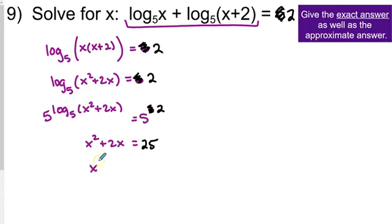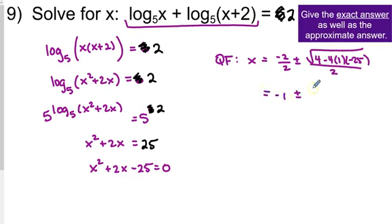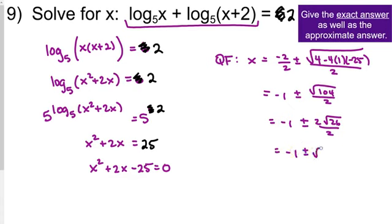It's still going to be a little complicated because it's likely not factorable, so we'll use the quadratic formula. We have x equals the opposite of b over 2a, plus or minus the square root of b squared minus 4ac over 2a. We get negative 1 plus or minus the square root of 104 over 2, which simplifies to negative 1 plus or minus 2 square root of 26 over 2, giving negative 1 plus or minus square root of 26.